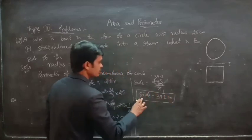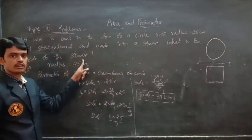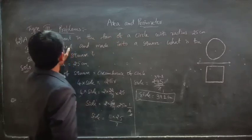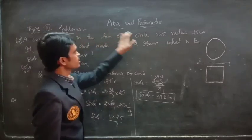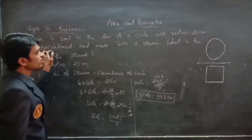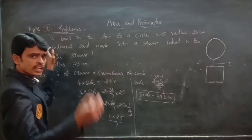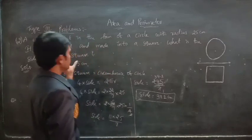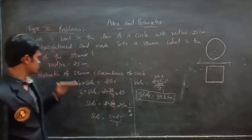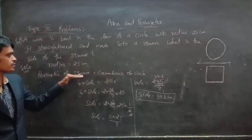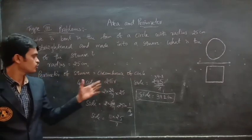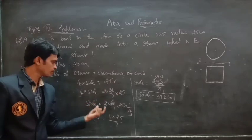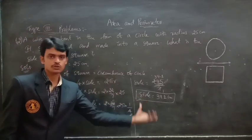The side of the square is 39.2 cm. The wire bent as a circle is straightened and made into a square using the same length. By equating perimeter of square to circumference of circle and using pi value 22/7, we find the side of the square.